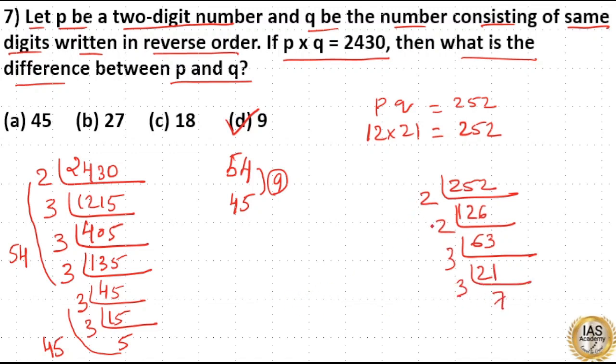Now you can see 2×2 is 4, 4×3 is 12. Again, 7×3 is 21. Now 21×12 is 252. So here, option D is your answer.